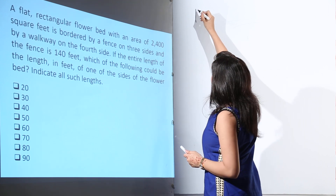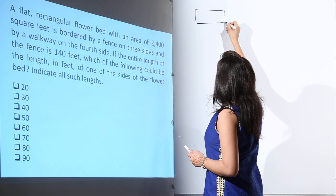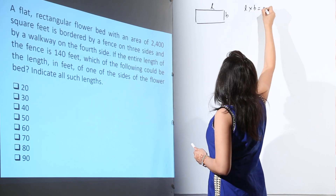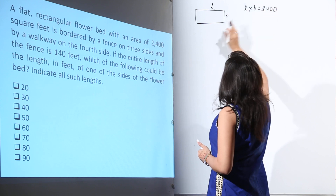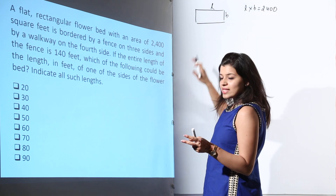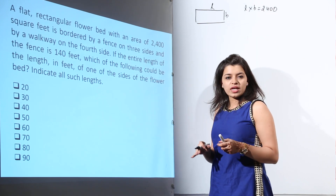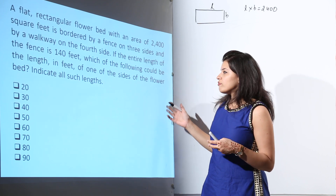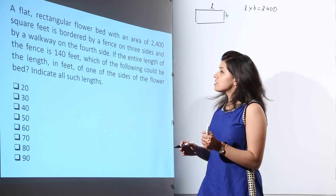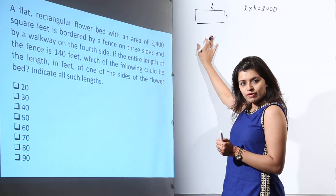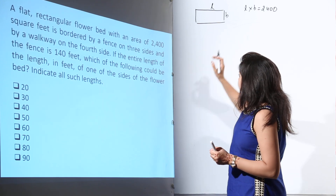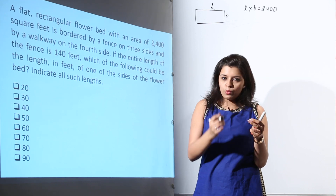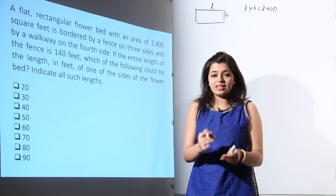We have a flat rectangular flower bed — this is the length, this is the breadth. We are given its area as 2400 square feet. It is bordered by a fence on three sides and by a walkway on the fourth side. The entire length of the fence is 140, and we have to find all possible lengths of the flower bed. We are not told whether the fence borders two lengths and one breadth, or two breadths and one length.